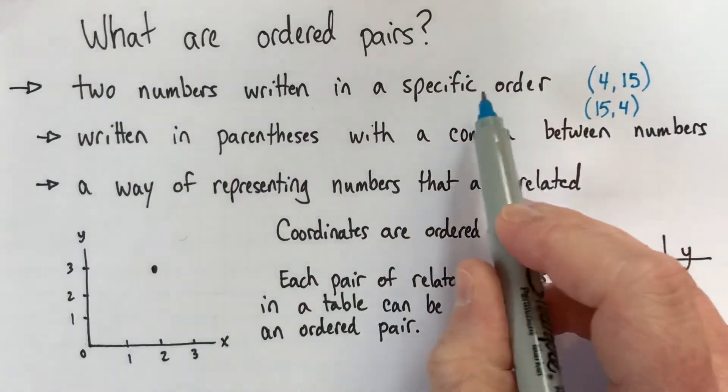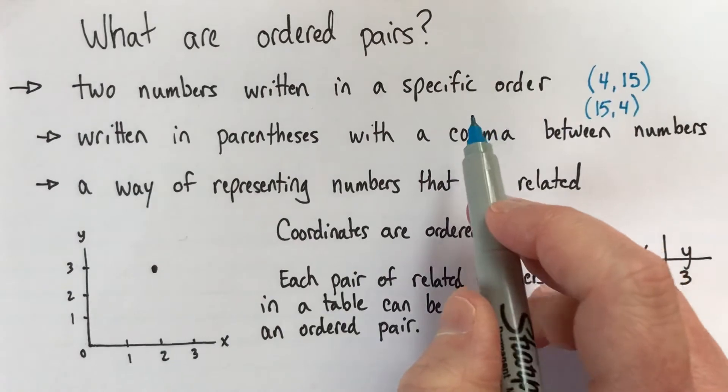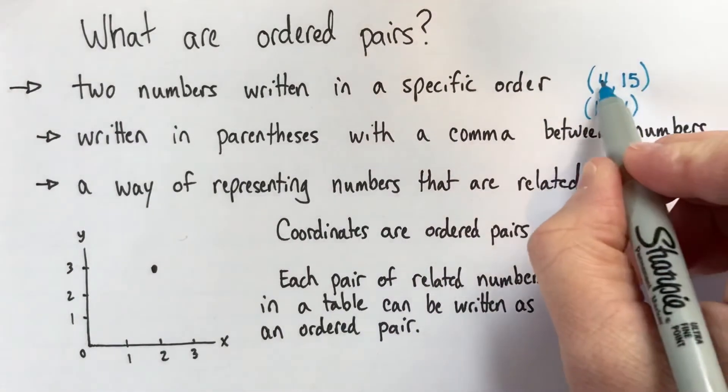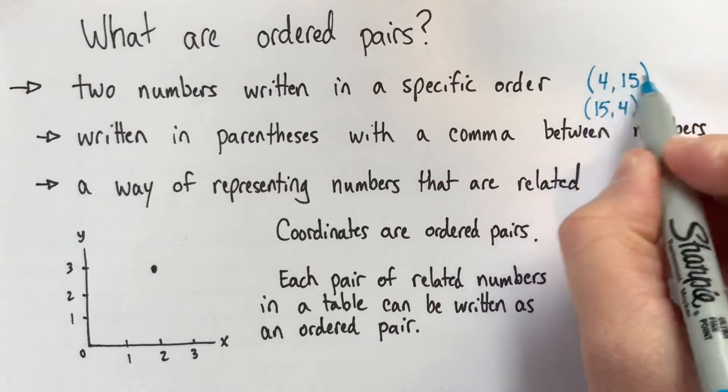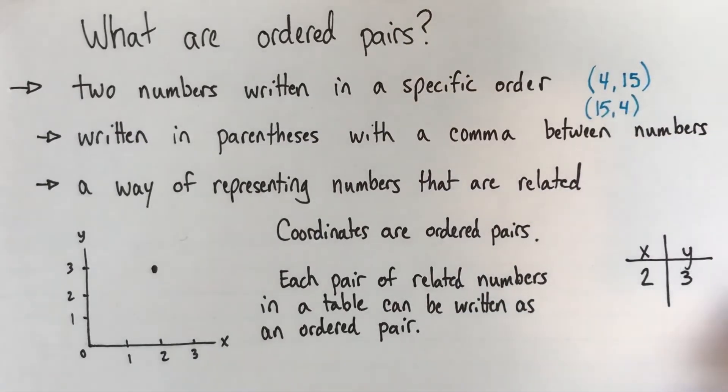So this is what I mean about the specific order. You don't necessarily have to write the smaller one first or anything, but 4, 15 is different than 15, 4. The order is important.